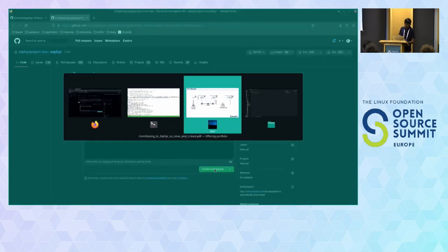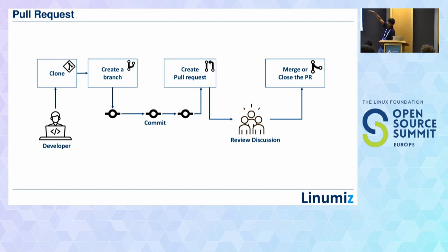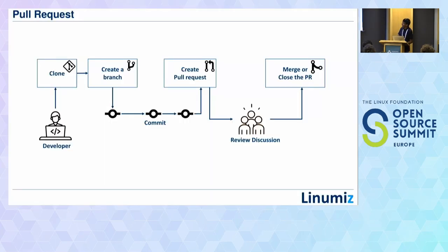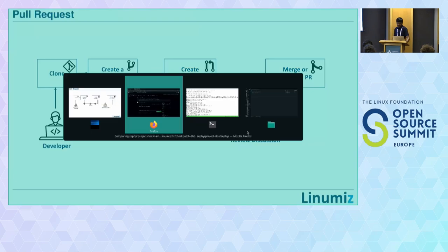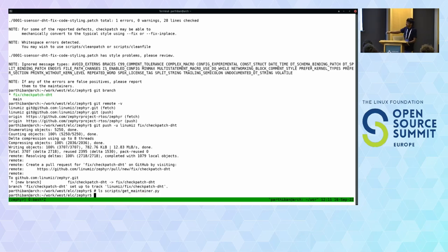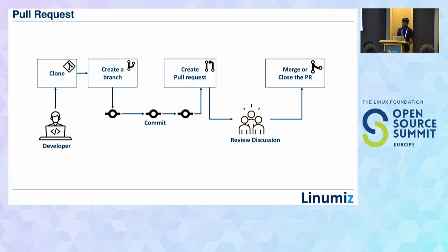Summarizing the workflow: fork it, clone it or add the remote, create a new branch, add a set of commits, then create the PR. Once created, it goes to discussion. The respective maintainer is auto-assigned by the Zephyr bot. If you want to add specific reviewers you've discussed with, you can. There is a 'get_maintainer.py' script — similar to the one from the Linux world — that tells you who the maintainer is and their email address. You then speak with the maintainer, resolve conversations, and iterate.